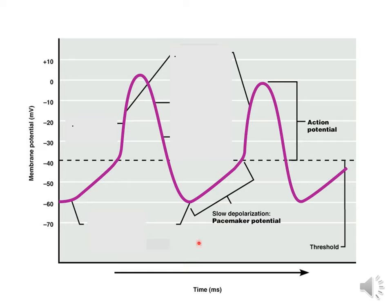In a pacemaker tissue, the phases of pacemaker potential, or slow depolarization, and action potential occur continuously in a rhythmic manner. Once the action potential is completed, the cells get hyperpolarized. This hyperpolarization leads to certain ionic changes that lead to further depolarization, and once the depolarization reaches the threshold level, the cells discharge an impulse in the form of an action potential. These changes keep happening continuously in a rhythmic manner.